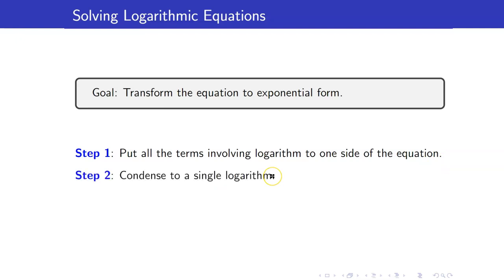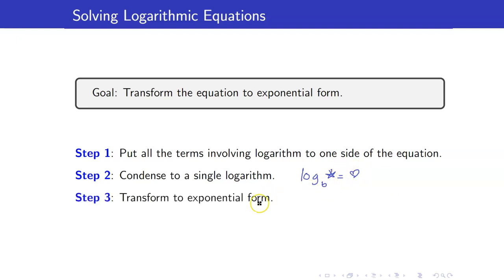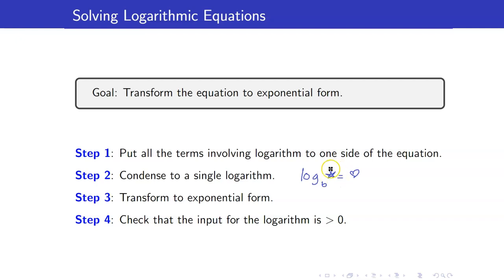Then you need to condense it to a single logarithm. Once you already have a single logarithm, meaning you have something of this form, you can now transform this into exponential form. For the last step, you have to make sure that the solution set you obtained will make the expression inside your logarithm positive. Otherwise, it is not part of the solution set, because for logarithmic functions, the argument has to be strictly greater than zero.